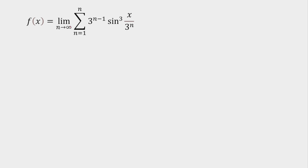So f of x is the limit as n tends to infinity of a summation. First I need to focus on how I can simplify the nth term. The nth term is 3 to the power (n−1) times sine of (x/3^n), all cubed, divided by 3 to the power n.